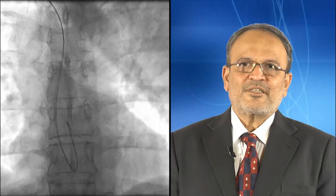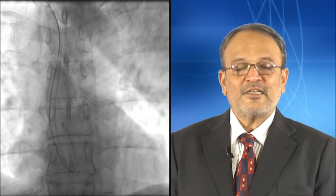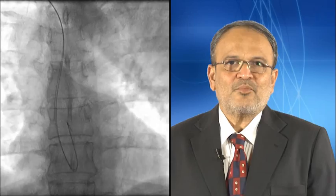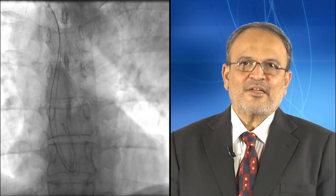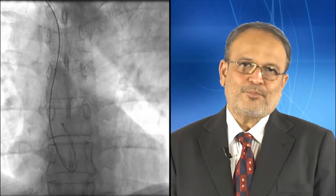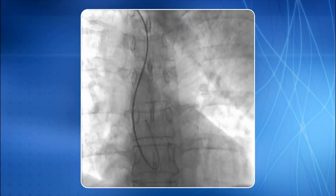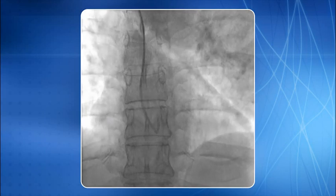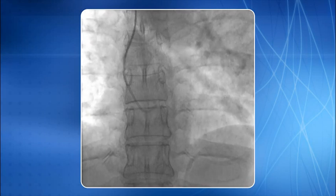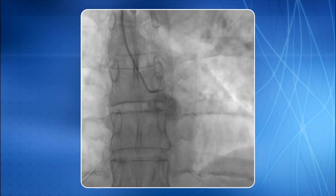I am now going to demonstrate coronary cannulation using a 5F opti-torque TIG catheter. A standard 0.035 inch guide wire is kept in the ascending aorta making a loop. The catheter is advanced over the wire into the ascending aorta. The wire is slowly removed and kept inside the catheter. A slow pullback is performed to cannulate the left coronary ostia. Cannulation is done.